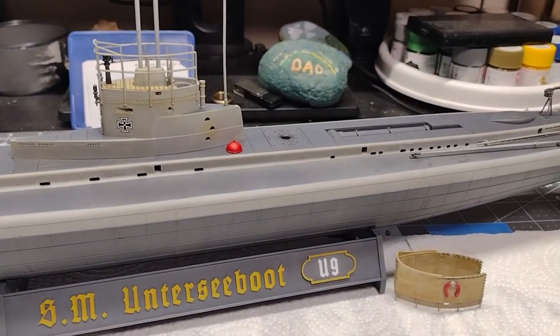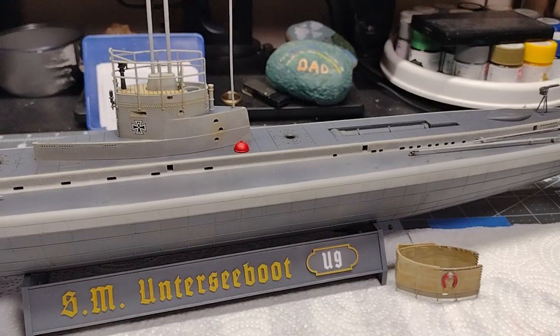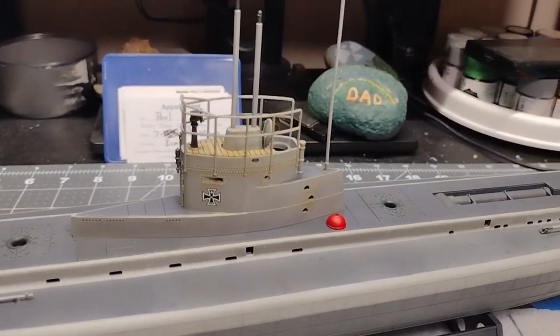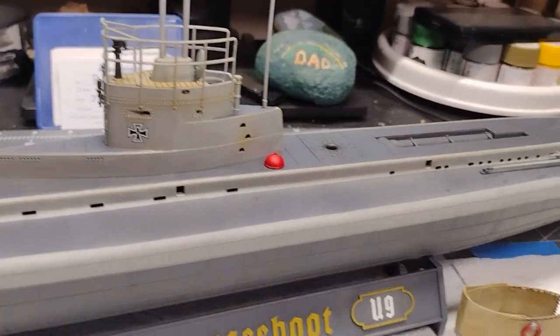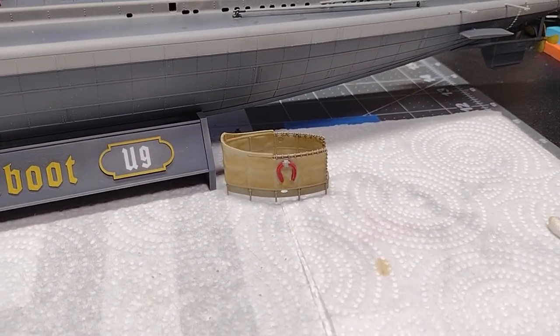It comes with two different parts you can put on top of the conning tower. You have the exposed railing, and then you also have the canvas covered railing.